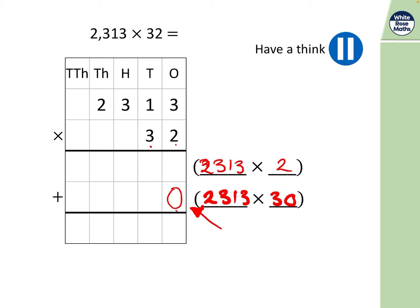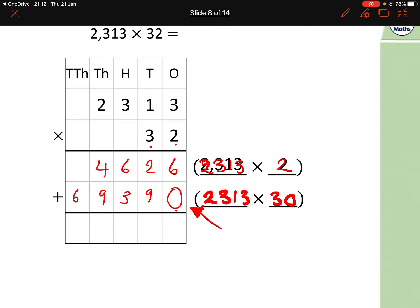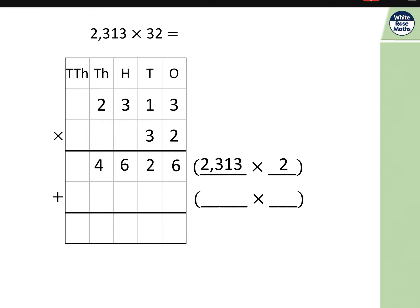So let's get on to this. I'm going to do my two times my three is of course six. Two times one is of course two. Two times three is of course six. Two times two is four. Now because I already have that zero there I don't need to worry about it. Now I'm going to do three times three is nine, three times one is three, three times three is nine, three times two is six. Then I'm going to add them up.